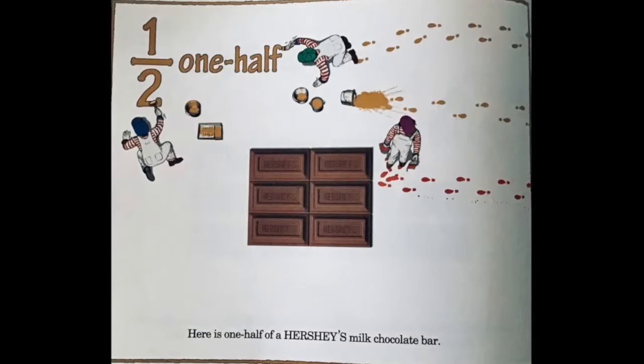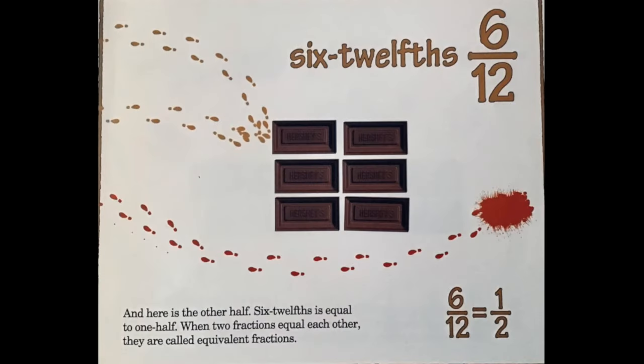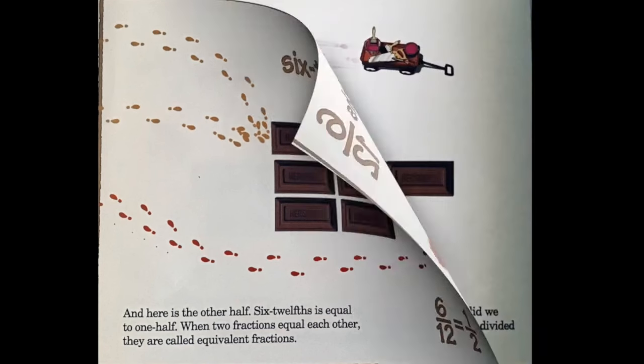Here is one half of a Hershey's milk chocolate bar, and here is the other half. Six twelfths is equal to one half. When two fractions equal each other, they are called equivalent fractions.